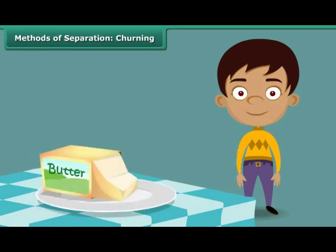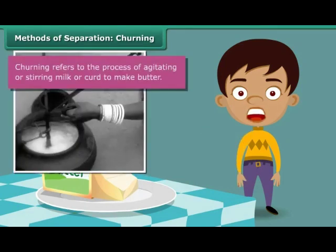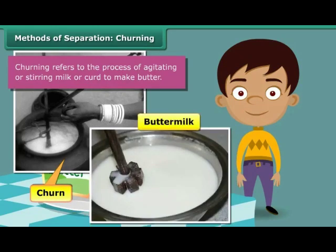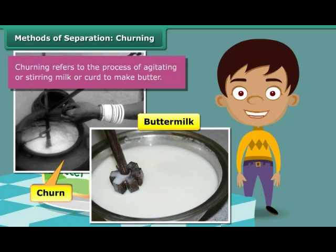This is butter. Do you know how butter is made? When milk is stirred vigorously in a churn, butter is obtained. The liquid left behind is the tasty, nutritive buttermilk that is relished by many as a refreshing summer drink. Do you see that two useful components emerge from a mixture when this method of separation is employed?